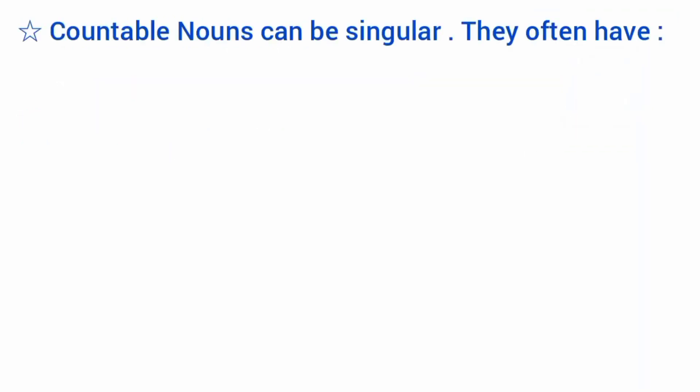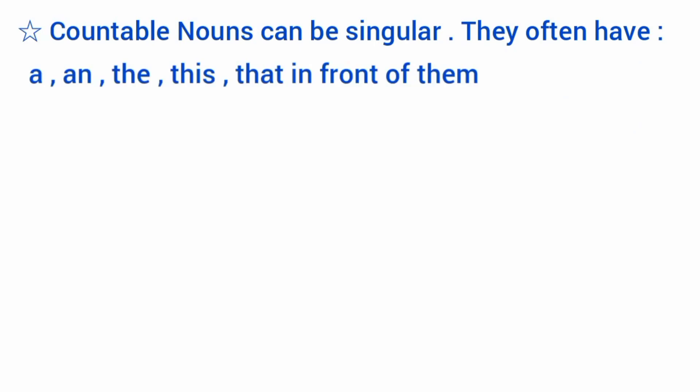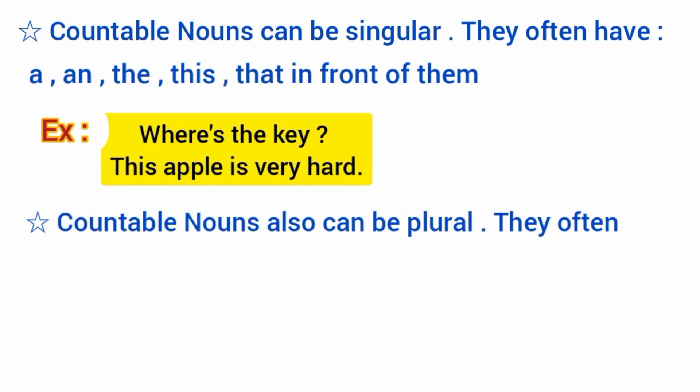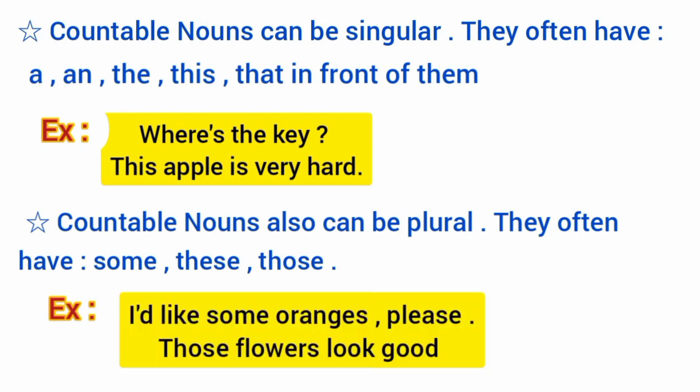Countable nouns can be singular. They often have a, an, the, this, or that in front of them. For example: 'Where's the key?' and 'This apple is very hard.' Countable nouns can also be plural. They often have some, these, or those in front of them. For example: 'I'd like some oranges please' and 'Those flowers look good.'